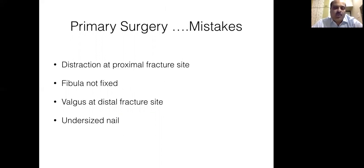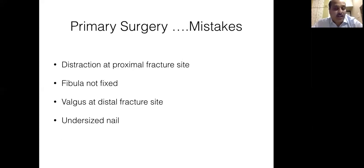Looking back at my primary surgery, what were the mistakes that I made? Probably I did not address the distraction at the proximal fracture site. This is a problem very common with segmental fractures and mentioned in many studies. The conventional technique of back-slapping used while closed nailing the tibia to achieve compression at the fracture site may not work here, because after having locked distally, if you back-slap, most of the energy is lost at the distal fracture site and it might actually deform there instead. You have to use different methods for achieving compression of the proximal fracture site, like manual thumping or using a temporary compression plate.